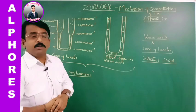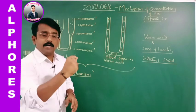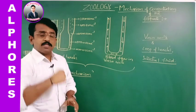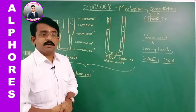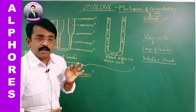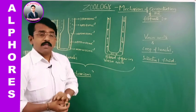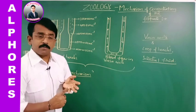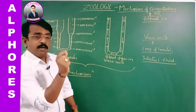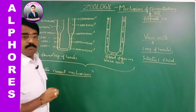In the distal convoluted tubule, facultative reabsorption — that is, conditional reabsorption regulated by hormonal influence — of water by ADH/vasopressin and sodium reabsorption by aldosterone takes place. So again in the DCT it becomes isotonic. The DCT leads into the collecting duct, where conditional reabsorption of water and ions takes place. Besides that, some amount of urea and water are reabsorbed from the collecting duct into the interstitial fluid, and the same is discharged into the ascending limb of the loop of Henle.